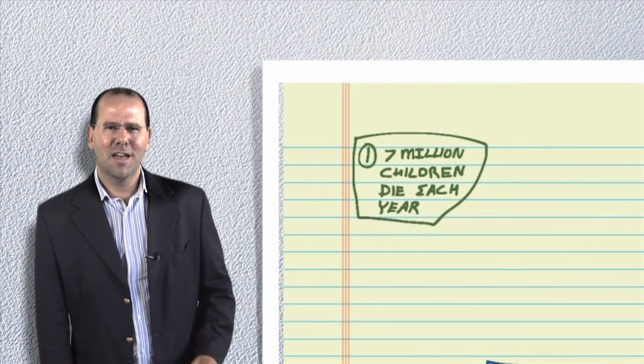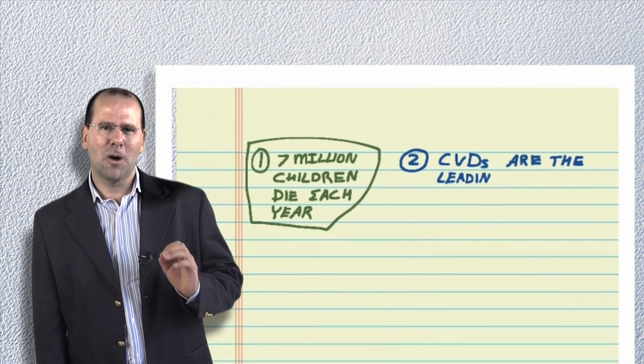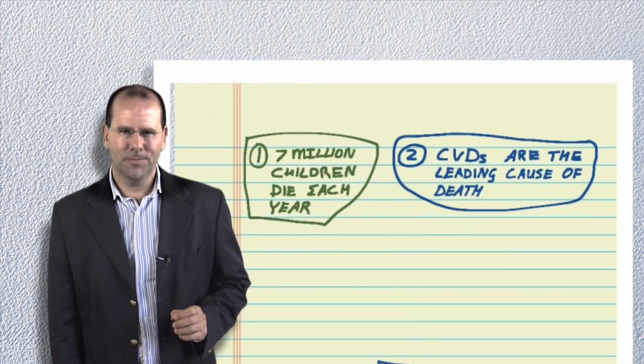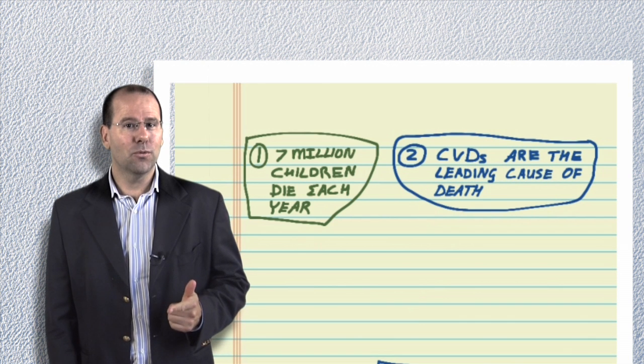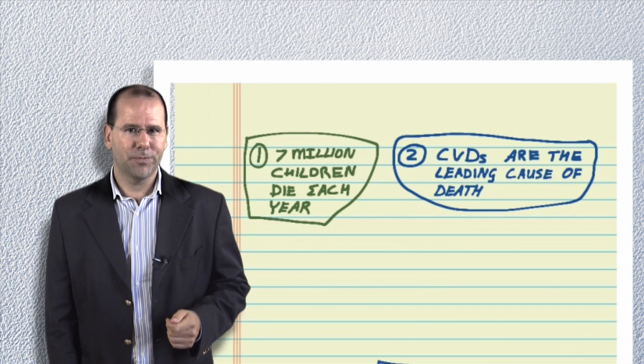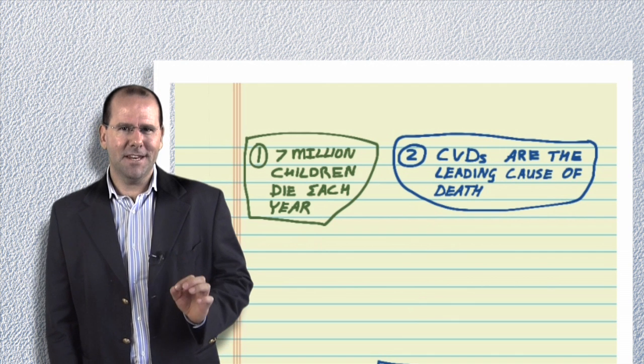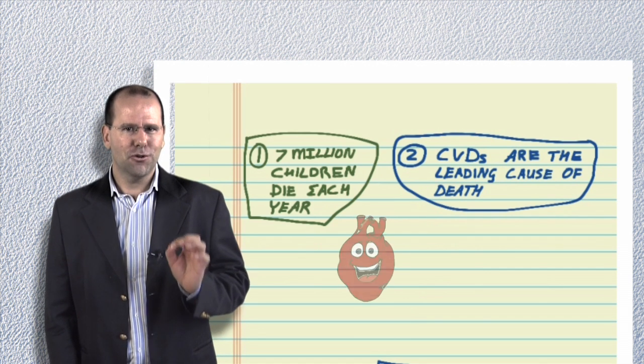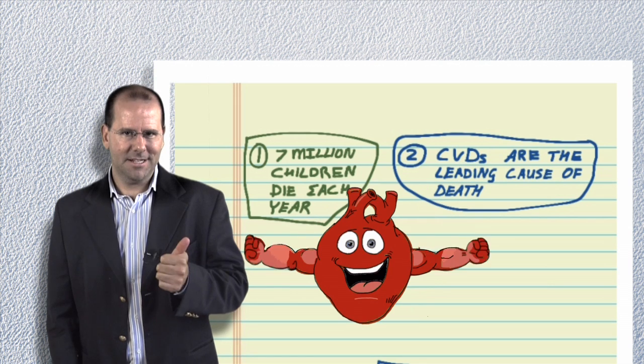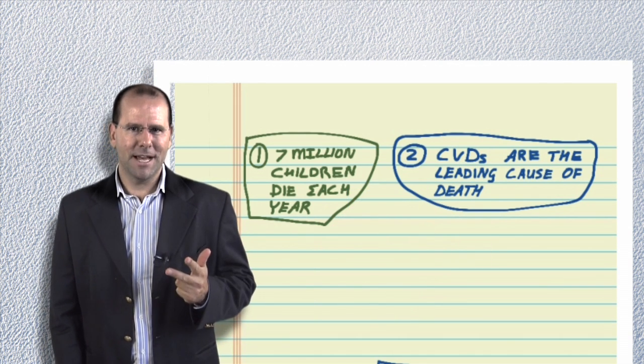Fact number two: cardiovascular diseases are the leading cause of death in the world. Cardiovascular diseases are diseases of the heart and blood vessels that can cause heart attacks and strokes. At least 80 percent of premature deaths from cardiovascular heart diseases and strokes could be prevented through healthy diet, regular physical activity, and avoiding the use of tobacco.